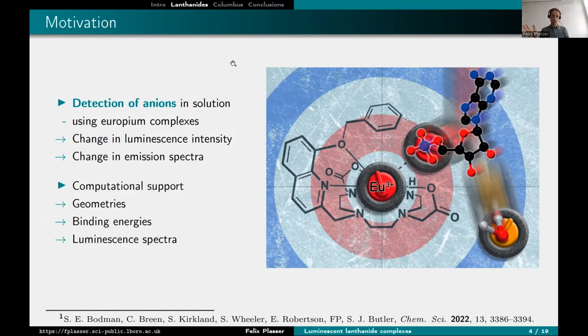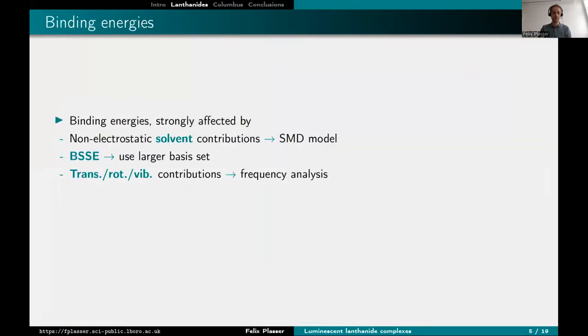For the computational support, we can compute geometries. That's fairly trivial. We get the binding energies. That's a bit harder. And the luminescence spectra is probably the most difficult bit. That's where we need OpenMolcas. And that's what I want to focus on. Geometries are easy, binding energies don't want to talk about it, but first you have all these non-electrostatic solvent contributions. So you have to really think about your solvent model. Then you bind two things, so basis set superposition error is strong.